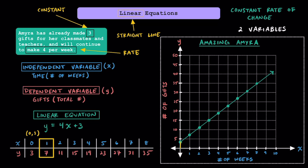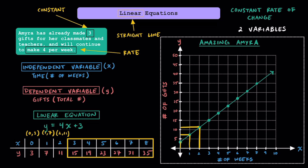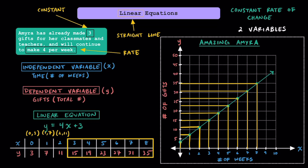And this 1, 7 in the table represents the ordered pair (1, 7). Looking on our graph, we have x equals 1 here, and y is equal to 7. Next, in our table we have 2, 11, which is the ordered pair (2, 11), and we can see on our graph that here is where x is equal to 2 and y is equal to 11. For the rest of the values in this table, we can create more ordered pairs — each of these dots on the line represents the ordered pairs created from the table.